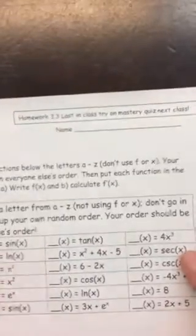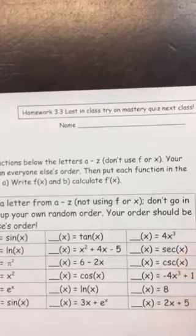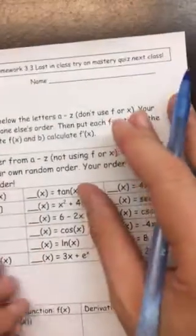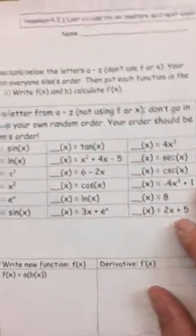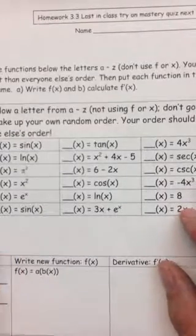All right, in homework 3.3, this is our last practice on chain rule stuff before your last try on your mastery quiz in class. You'll be able to take it outside of class, but you want to make sure you're ready. This one has kind of weird directions, and that's actually the only thing I'm going over, as you should already know how to do chain rule from previous homeworks. This is just more practice.